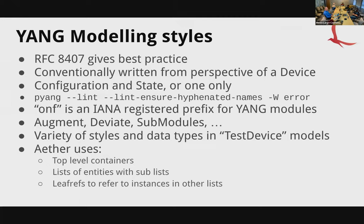The authors of YANG came out with an RFC — RFC 6087 — giving best practices for how to write your YANG. In the ONF config models, we use P-Yang lint, and that lint applies RFC 6087 to make sure you're following best practice, including things like ensuring hyphenated names. Sometimes the lint gives a warning, and we're turning those into errors now. We're trying to create some limits on the YANG variability coming in.